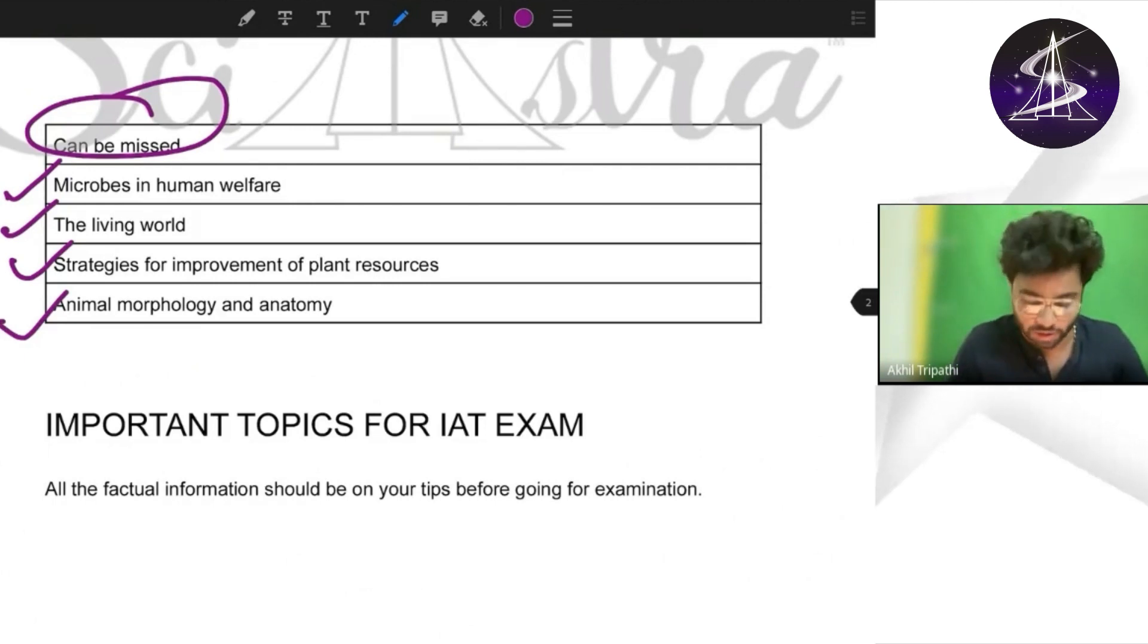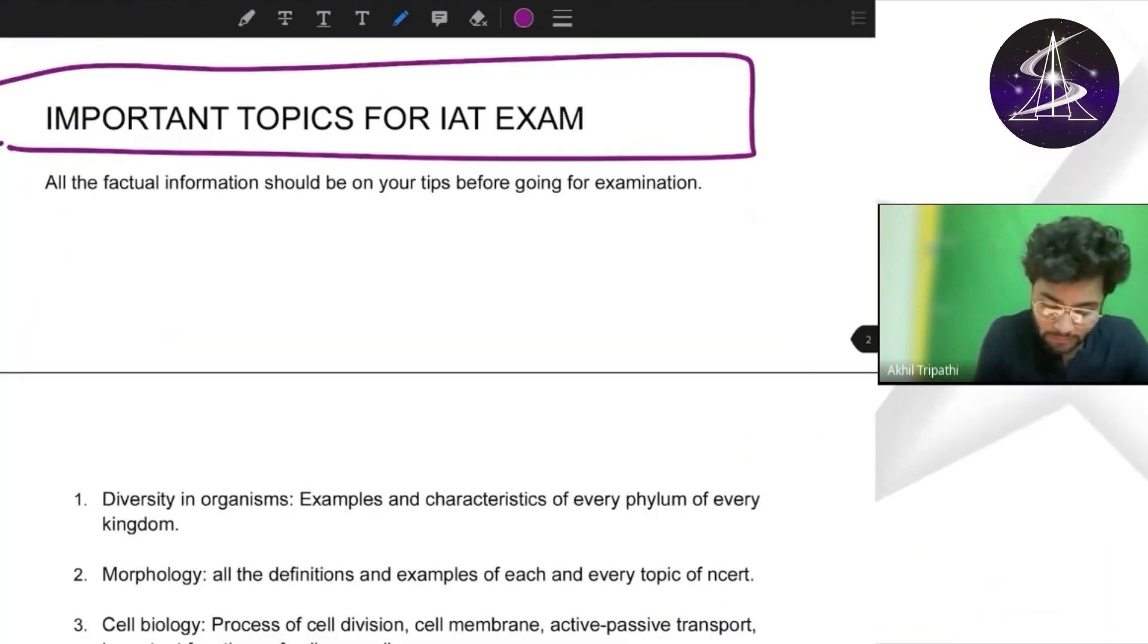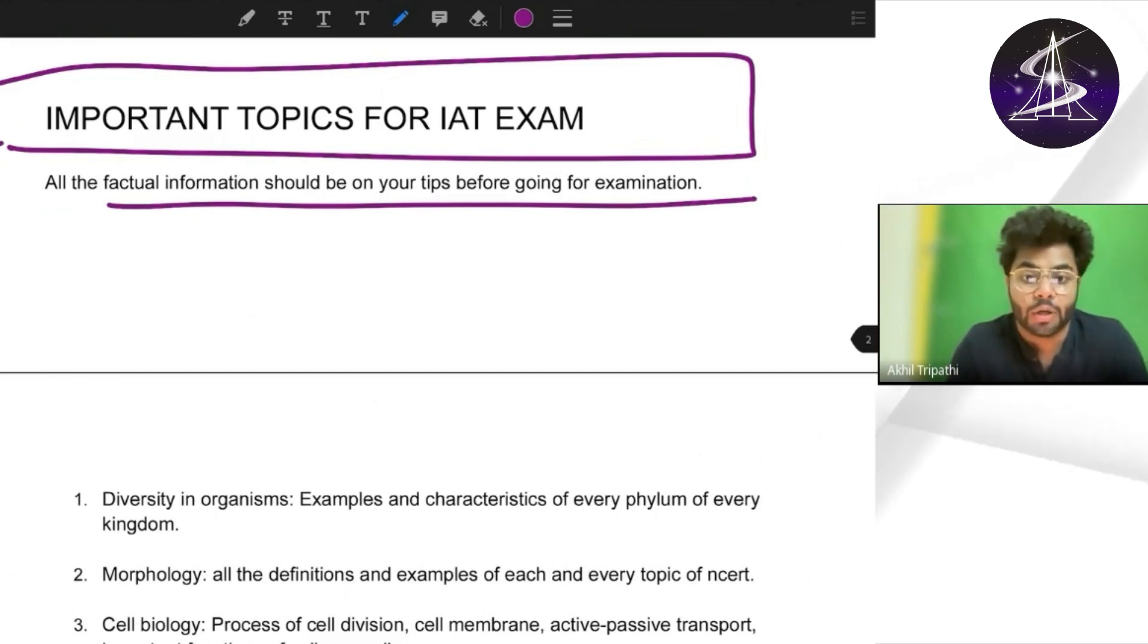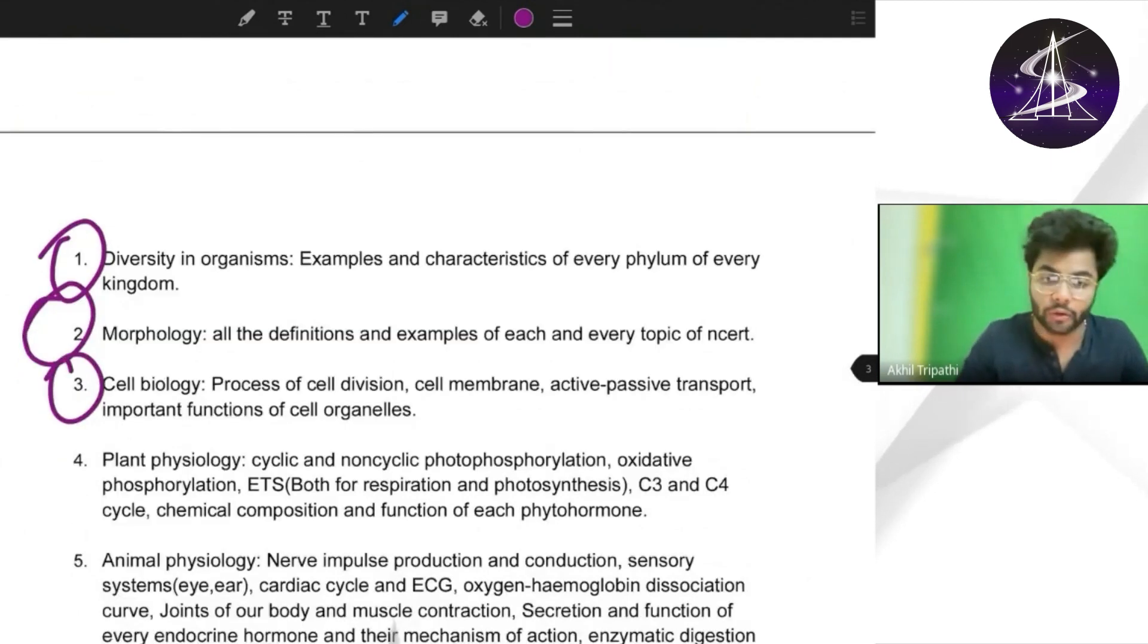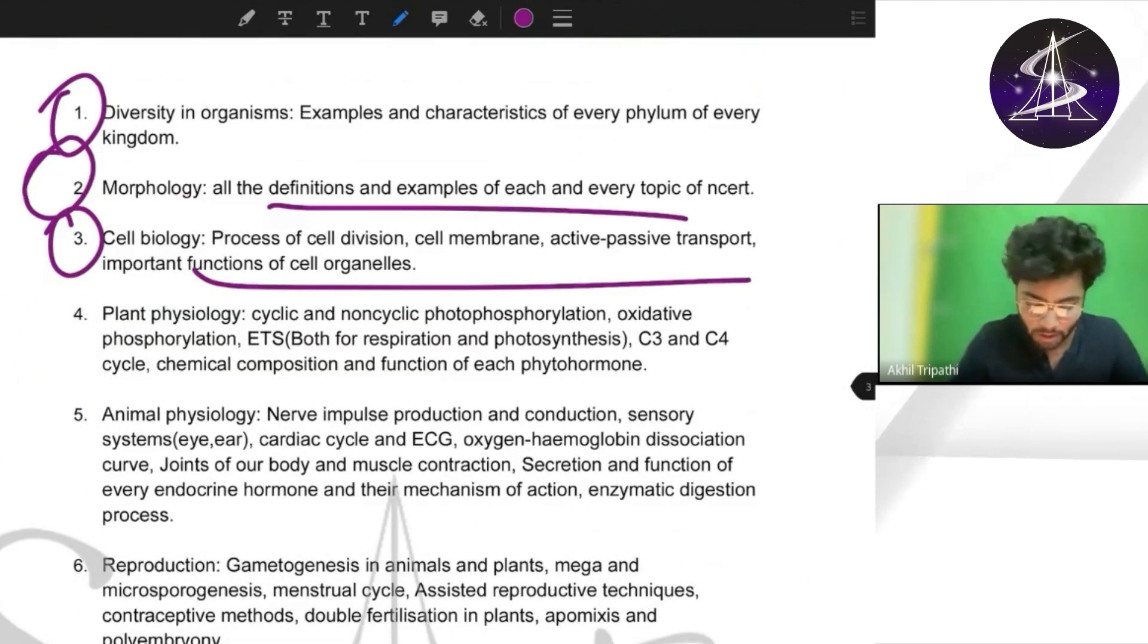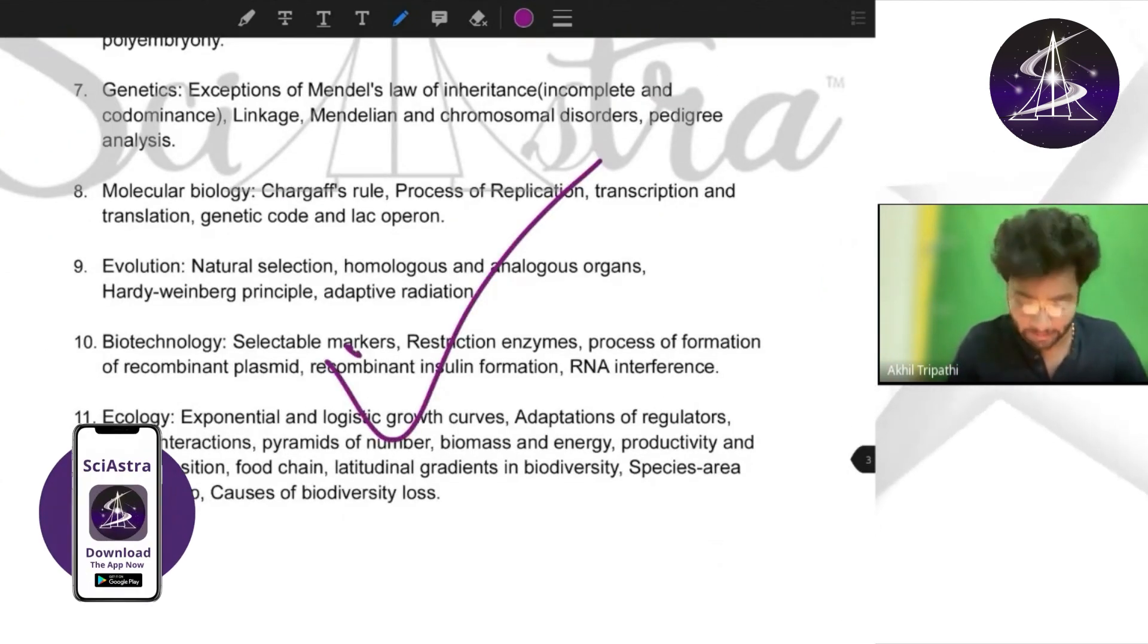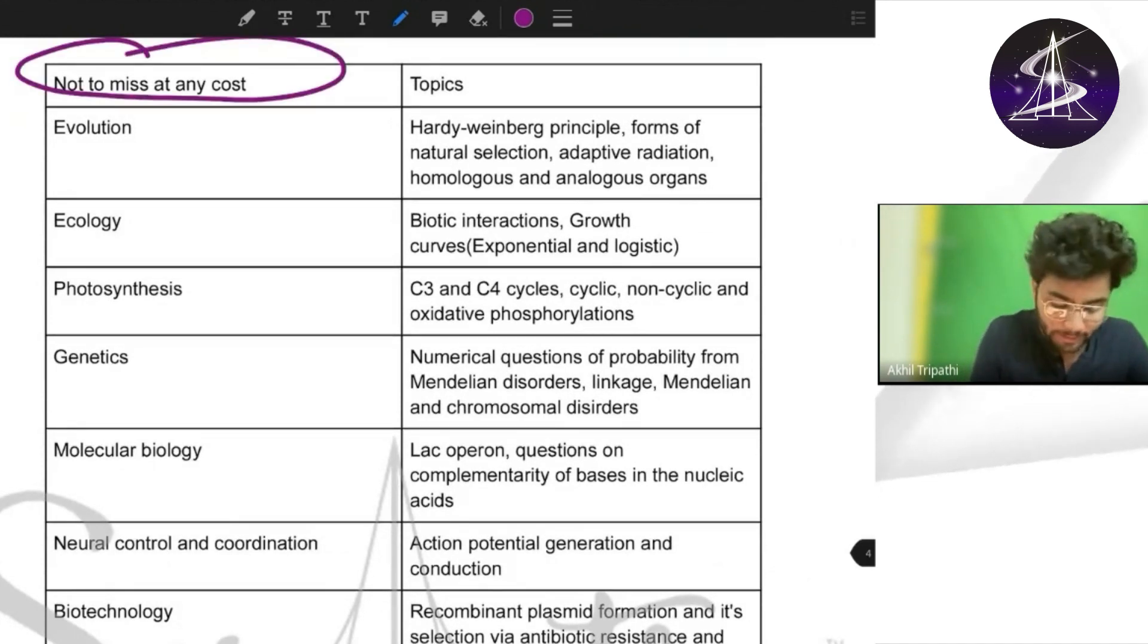Now let's come to the important topics and chapters for IAT aptitude test. One important thing for all of you - even some questions which are based on facts can come for IAT 2023 exam. For NEST generally the fact-based questions do not come except those easy 10th level questions in that section, but for IAT even general level questions can come. Again, this whole thing I'm not going to describe otherwise it will waste a lot of your time. You will get this PDF in our Sayestra app. Let me come to the table and summarize for you again. Evolution is important - Hardy-Weinberg equilibrium, forms of natural selection. We have added adaptive radiation, homologous and analogous organs. Coming to ecology, photosynthesis, genetics, molecular biology, neural control coordination - all again same.